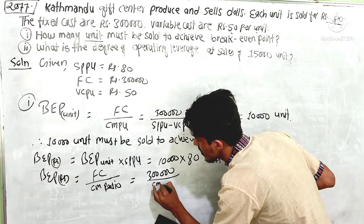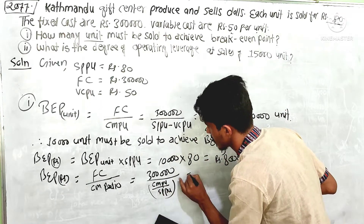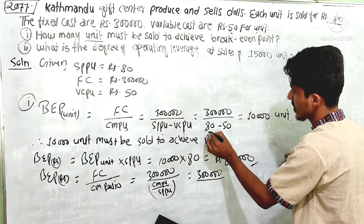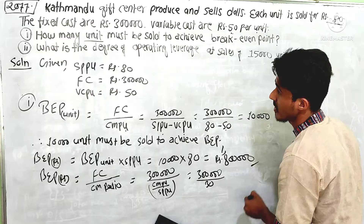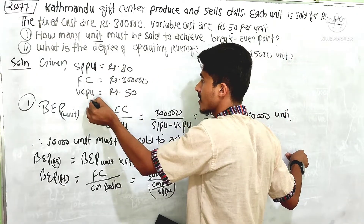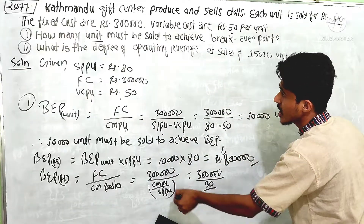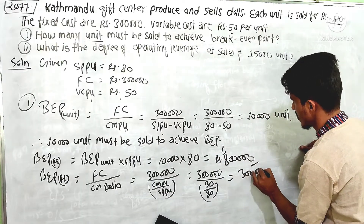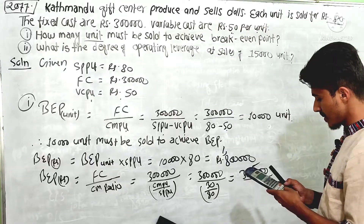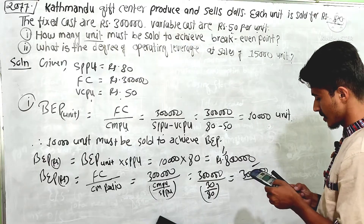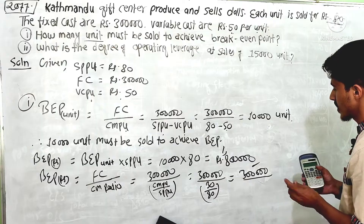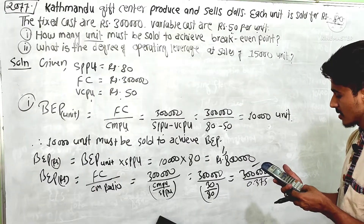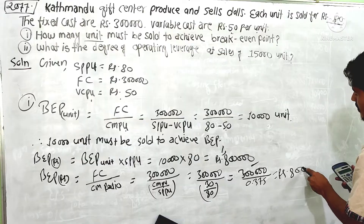It is done by CMPU. The BEP is 3,00,000 divided by CMPU. CMPU is calculated as selling price per unit minus variable cost per unit divided by selling price per unit: 80 minus 50 divided by 80 equals 0.375. So three lakhs divided by 0.375 gives the sales break-even in rupees.